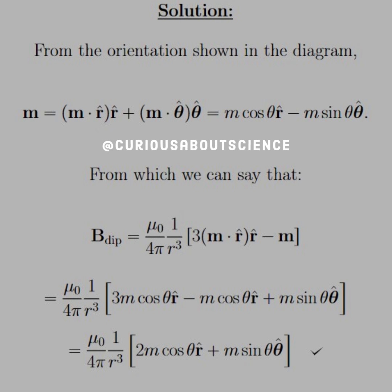And then because we have 2 minus signs, we have plus m sine theta theta hat, and it condenses down just like before and as expected.